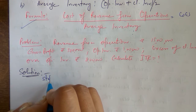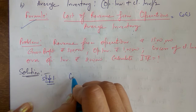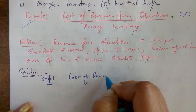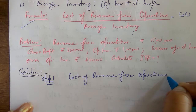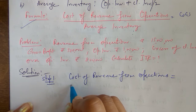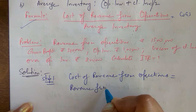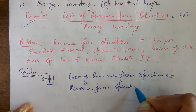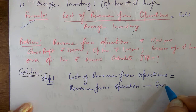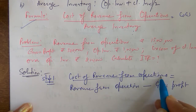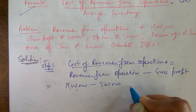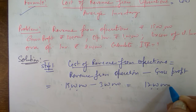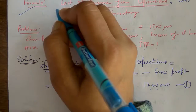We will solve this step by step. Step 1: Calculate cost of revenue from operations. We know that revenue from operations minus gross profit gives cost of revenue from operations. Putting in values: ₹15 lakh minus ₹3 lakh = ₹12 lakh. So cost of revenue from operations = ₹12 lakh.